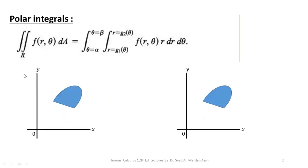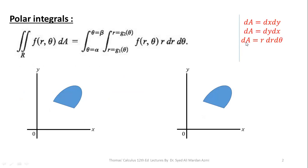In the next step, we will learn what a polar integral looks like. On the left-hand side, it is given that double integral over the region R of f(R, theta) dA. This is the general form of a polar integral. In this polar integral, our integrand is in the form of a function of R and theta, and dA is a small area element of the region.